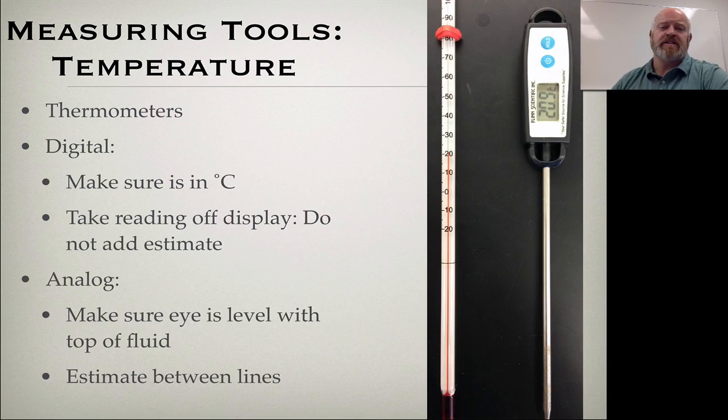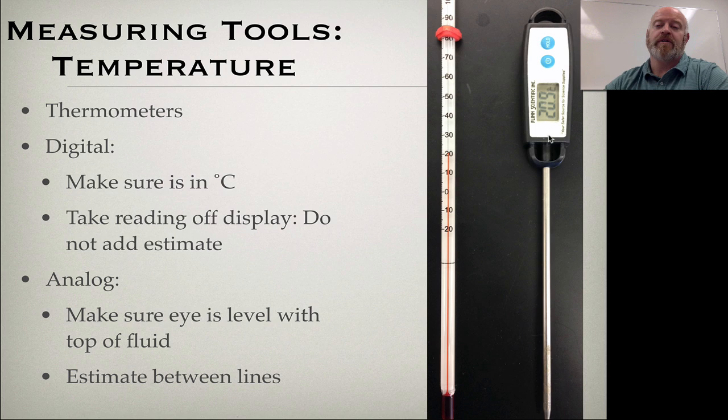Now, the last measuring thing is temperature. When we measure temperature, we have two different measuring tools that we use. We have a digital thermometer, and we have an analog one. The digital one works very much like the balance, where you just put it in your solution, and you read the number that comes off. A couple things to make sure is make sure it's in Celsius, because they do have a switch in the back that allows you to switch to Fahrenheit. And then second thing, for both thermometers, when you're taking a temperature, you always want to have the thermometer floating or suspended in the middle of that solution. You don't want them touching the glass on the outside or resting on the bottom, because it will take the temperature off the bottom or off the side.